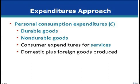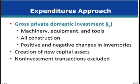The second component of the expenditures approach is gross private investment, which includes all final purchases of machinery, equipment, and tools by businesses, all construction, and changes in inventories. All of these items represent ways businesses invest in themselves.